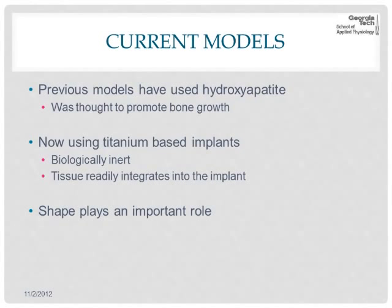Previous models used hydroxyapatite, which we originally thought was good at promoting bone growth, but we couldn't get the bone growth needed. We've now moved to titanium-based implants, which are biologically inert and allow tissue to readily integrate into the implant. Shape also plays a very important role in how well the implant integrates into both the bone and the skin — a very important consideration when using osseointegration with prosthetics.